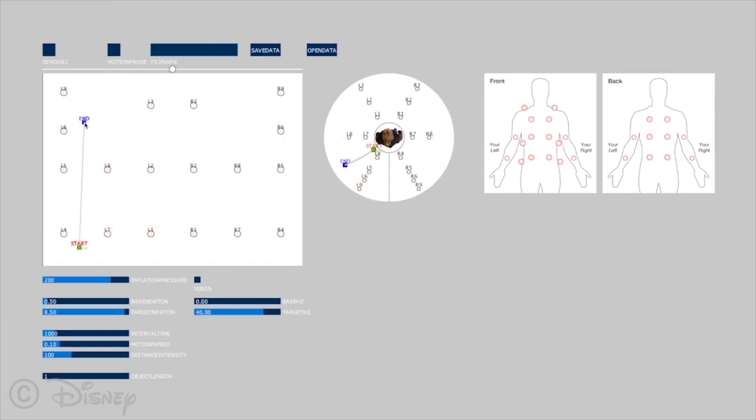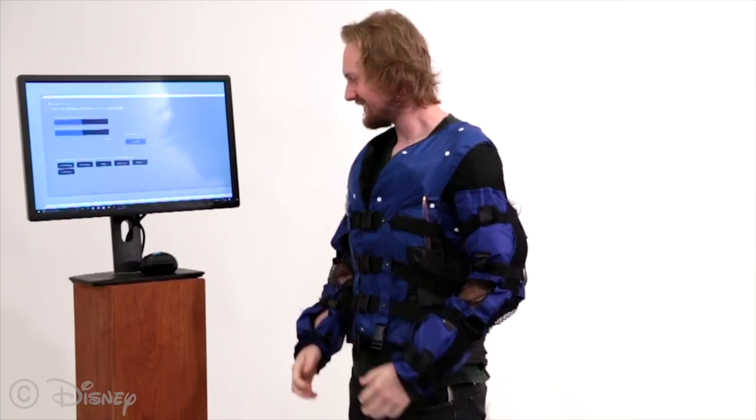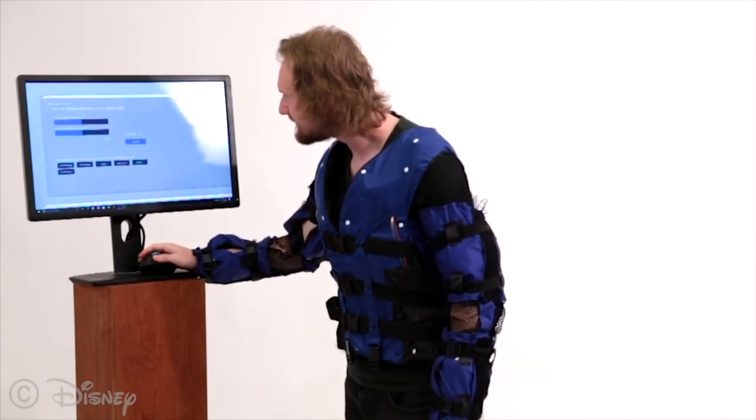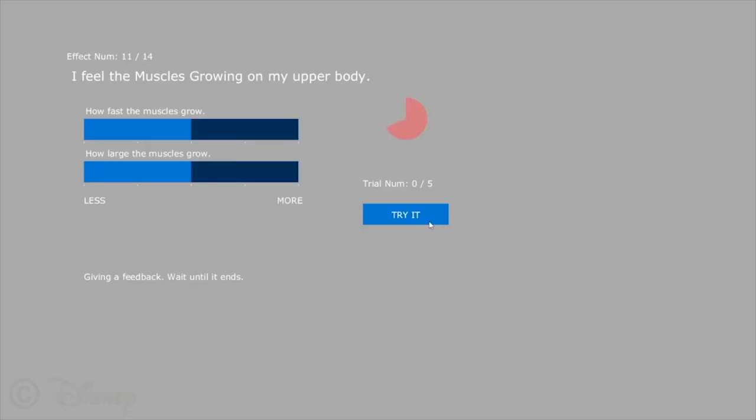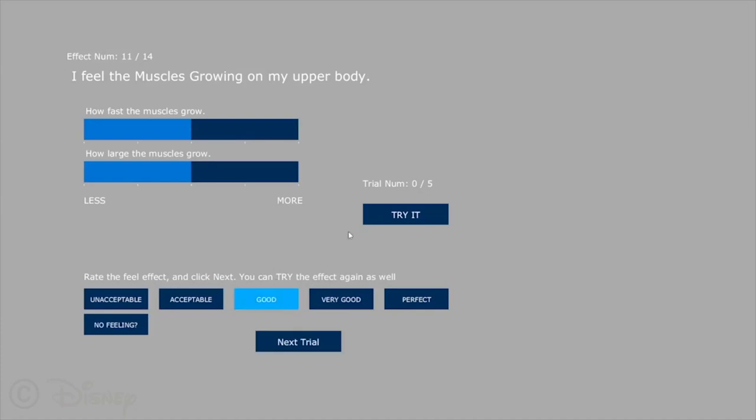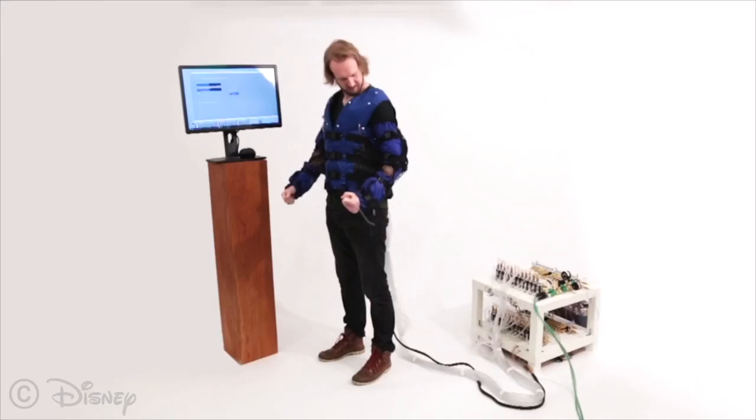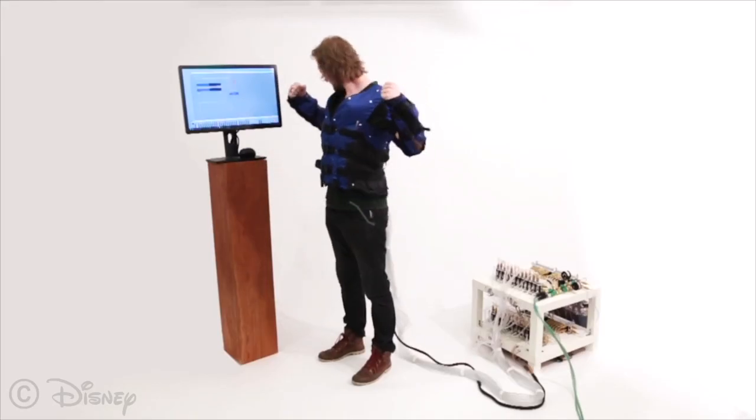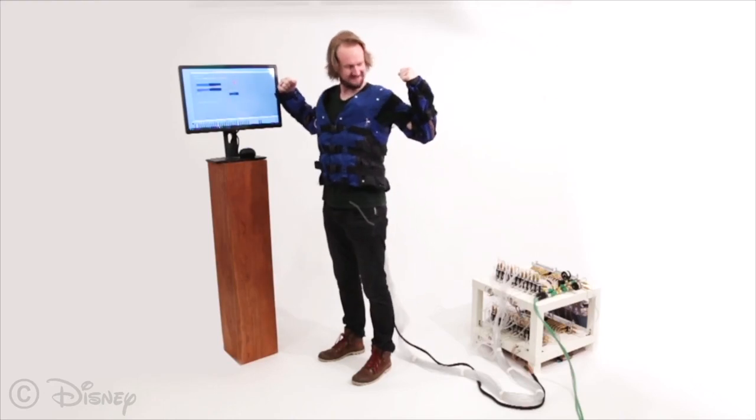In a study, users optimized 14 different feel effects by adjusting inflation parameters to match a language description. A user adjusted the sliders for muscle size and growth rate to produce the associated feeling.